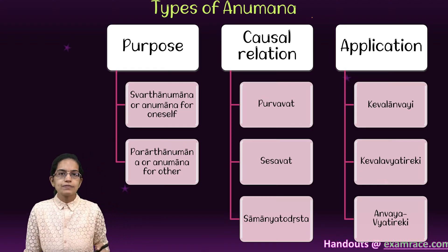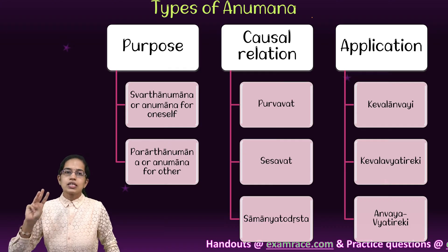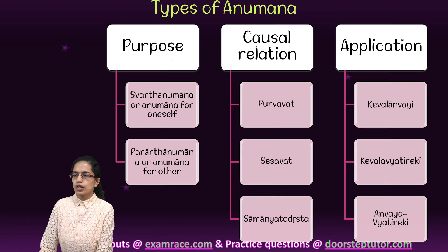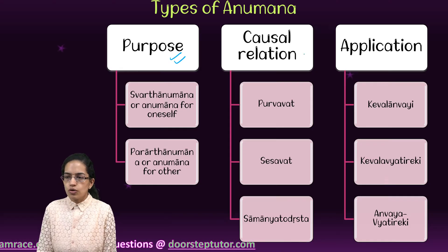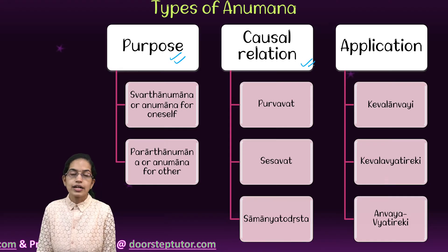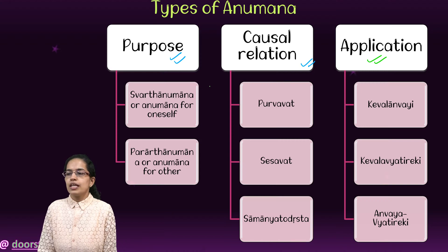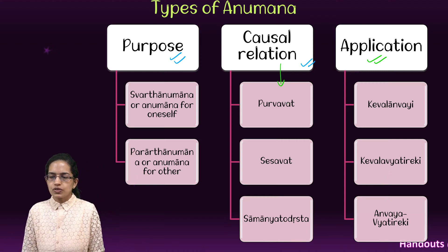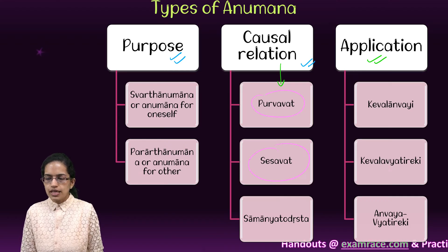Anuman can be classified in various ways. The three broad classifications are based on purpose, based on cause and effect, and based on application. Under cause and effect, there are three categories: purvavat, sesavat, and samantiyodrasht.